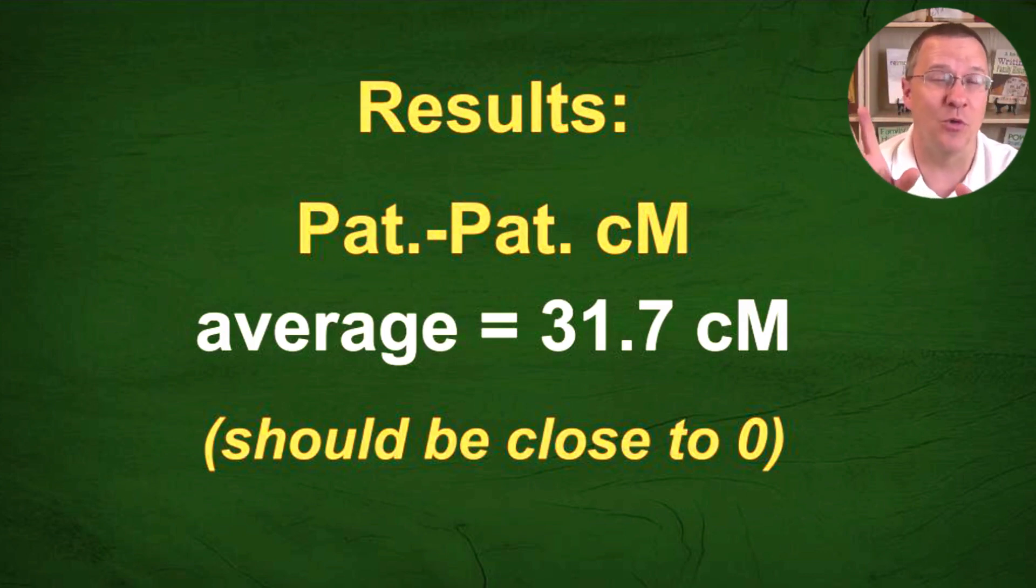But it turned out it was about the same as what it was between me and my cousin. About 31 centimorgans, positive difference. In other words, I shared more centimorgans than my brother even. And about the same amount, slightly more, than what I shared with my cousin with these matches. So that was the first little puzzling thing. I'm thinking, okay, well, maybe I've got something wrong in my thinking as far as why this is or how this is.